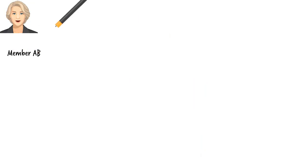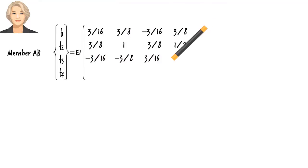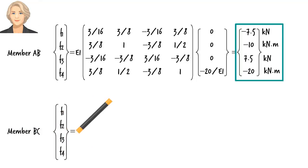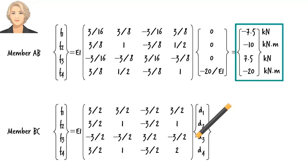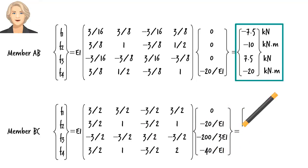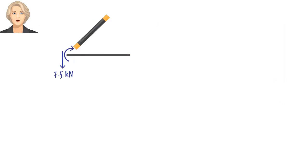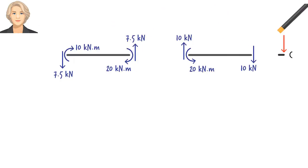Knowing the member displacement vectors, we can easily determine member force vectors. For AB we have... Making the substitution for the displacement vector, we get... So member end forces are... For member BC we can write... Here are the member end forces for BC. Knowing the member end forces for AB and BC, we can determine the support reactions like this.